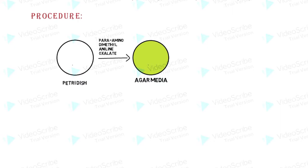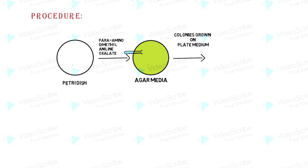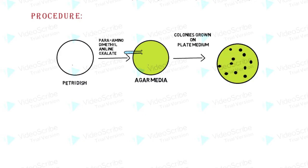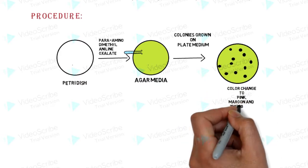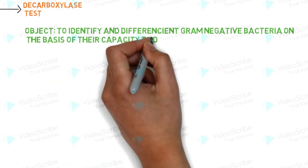Procedure: take a Petri dish and add agar media to it, then add paraminodimethyl aniline oxalate. The colony is grown on the plate medium, which appears first in light pink colour, then in maroon colour, and finally in black colour. This represents a positive Oxidase Test.